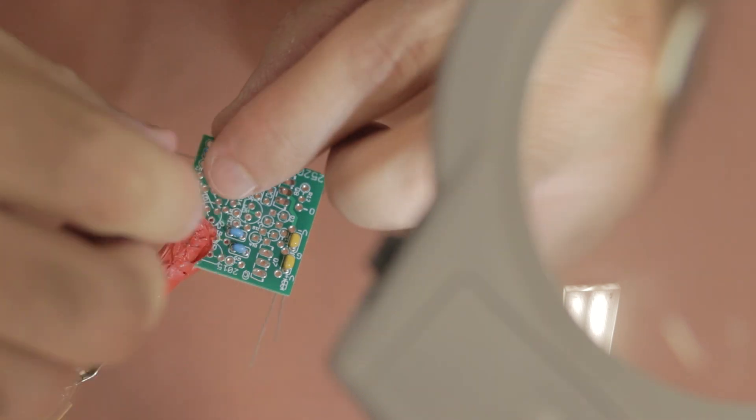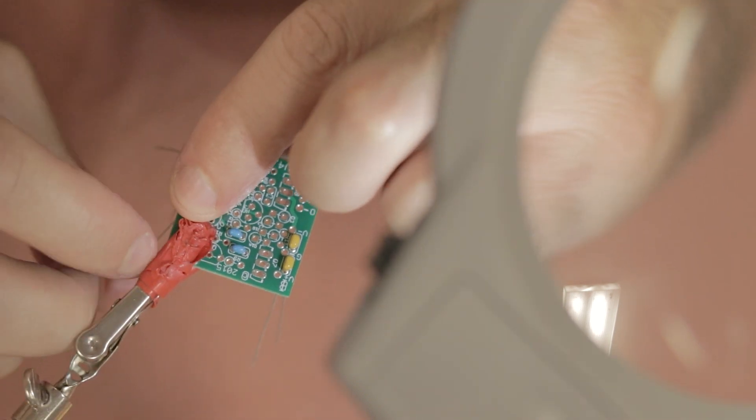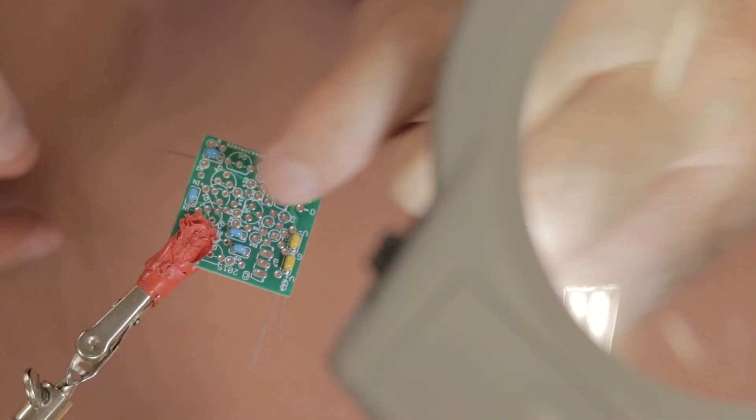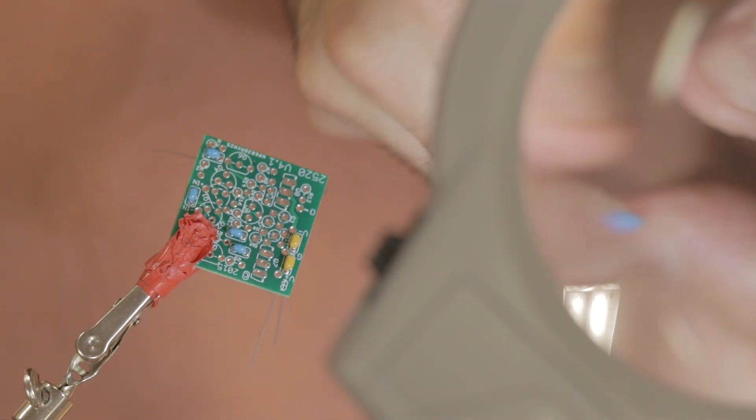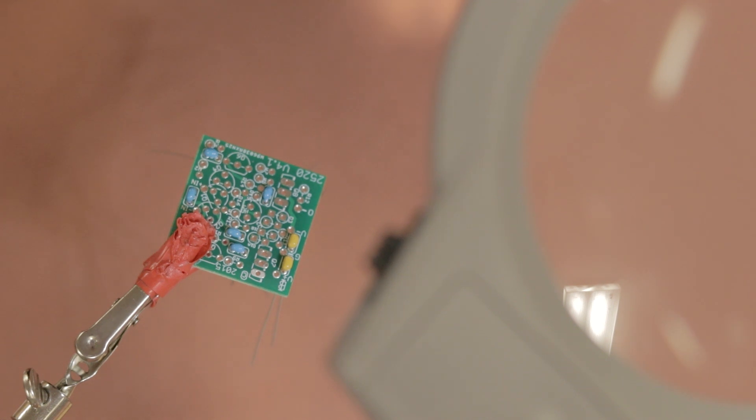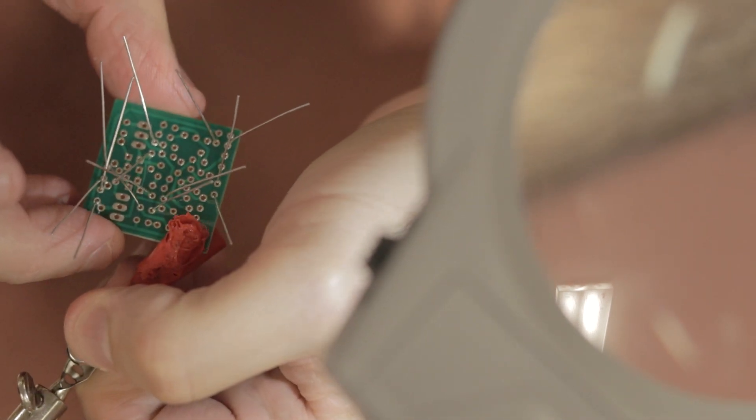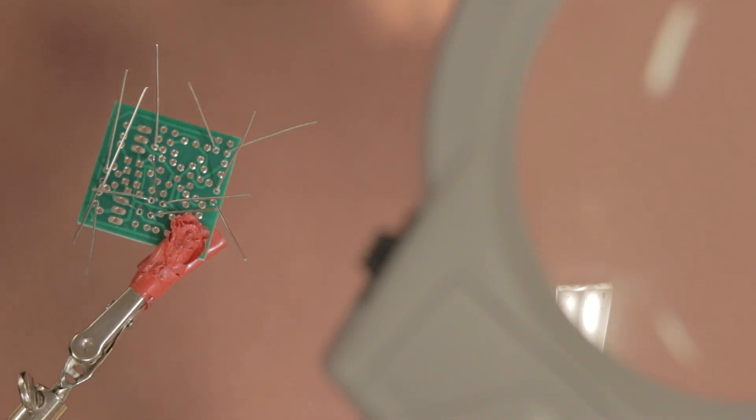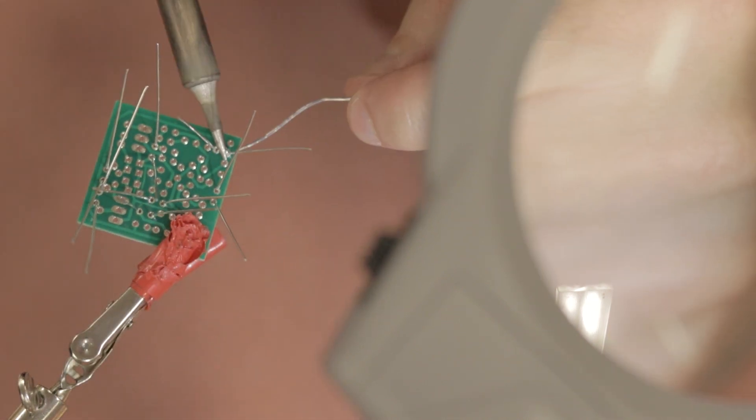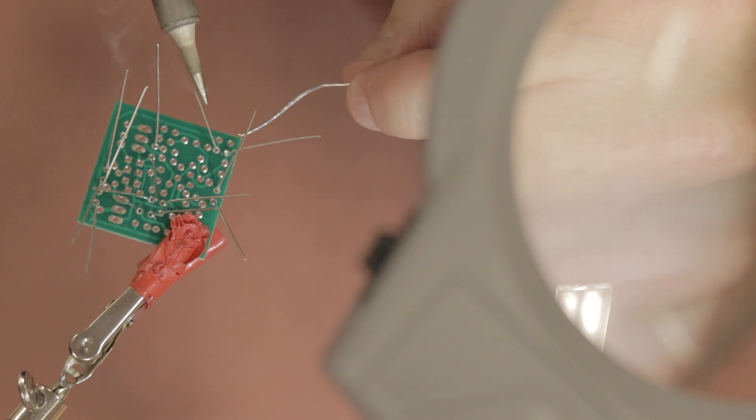And as you put these capacitors in, make sure you bend the legs at the other end of the PCB board. Once you've got these all in place, you can flip the little PCB board over and solder these in place.